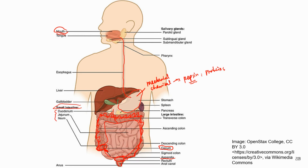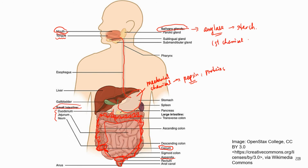Now let's look at the accessory digestive organs. A couple are associated with the oral cavity. The teeth perform mechanical digestion, and the tongue — a large skeletal muscle — helps mix food with saliva in the mouth. We also have salivary glands that deliver saliva into the oral cavity. Saliva contains the digestive enzyme amylase, which digests starch. So chemical digestion actually starts in the mouth — that's the first location for chemical digestion.